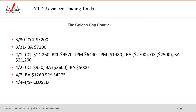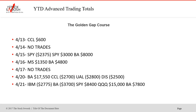April 1st — remember, this is back with COVID, beginning of it. Big winner in CCL, RCL, JPM, second one lost, BA had one loser, Goldman had one loser, and another big winner in BA. April 2nd, CCL won, BA lost, BA won, BA won. SPY won on the 3rd, and then room closed over the April period.